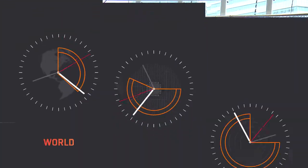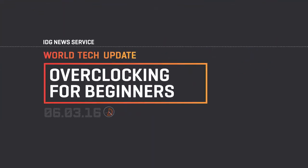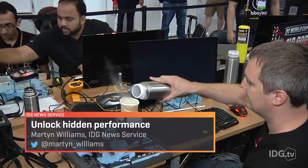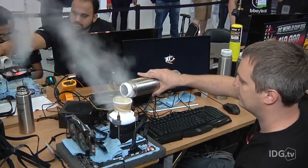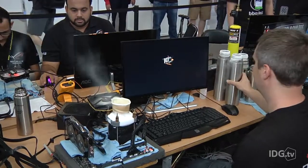Overclocking has had an exotic image, but it's getting easier. An Intel application actually lets you overclock your chips from the desktop. Here at Computex, I'm learning how to do that. Overclocking is running your processor and memory at higher than their rated speed, so you get more performance.